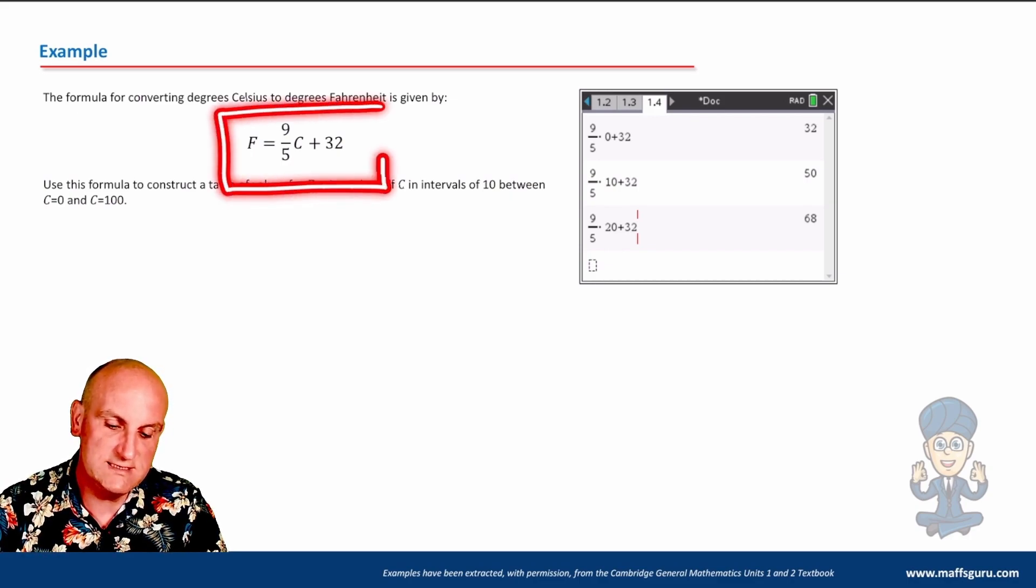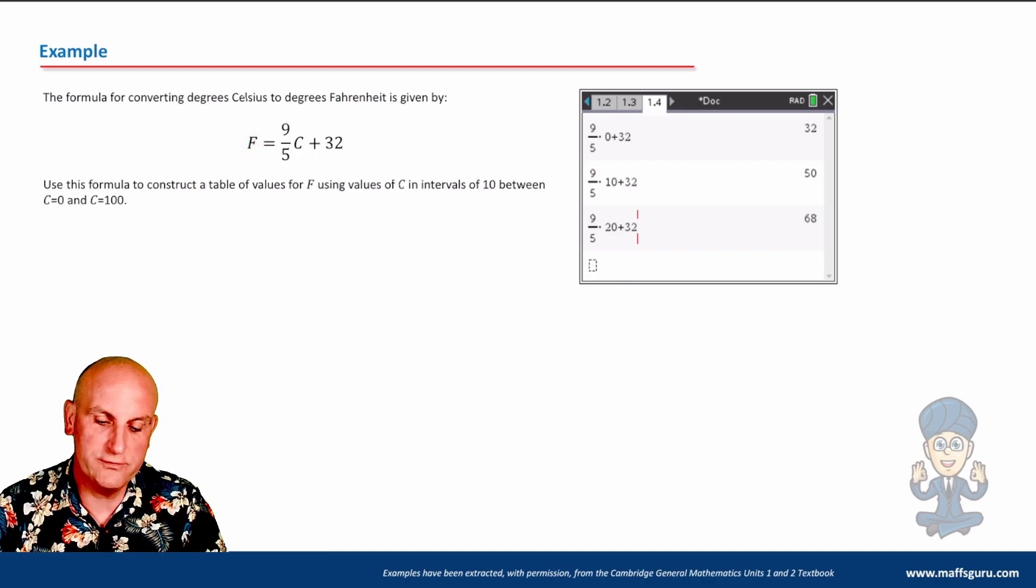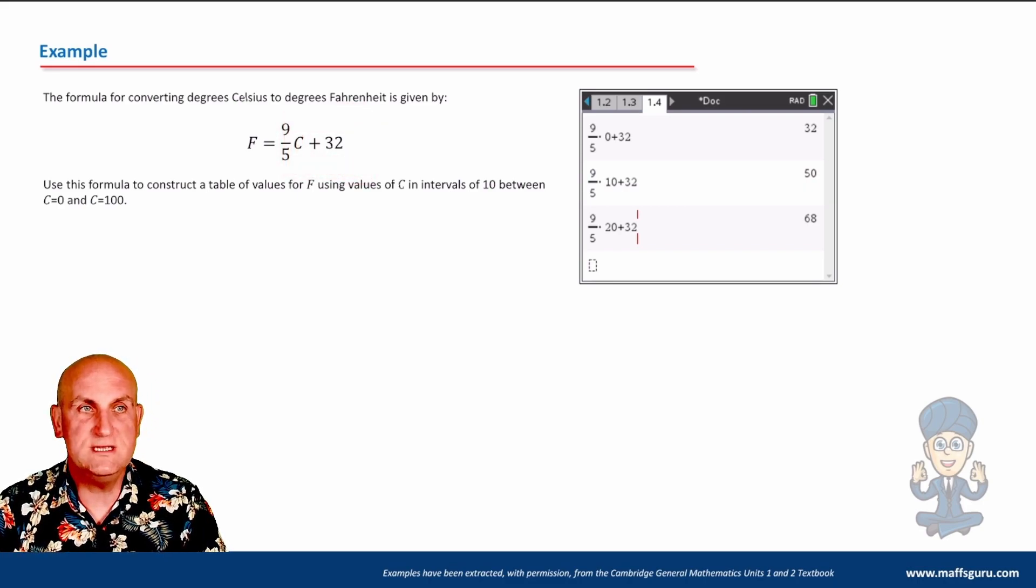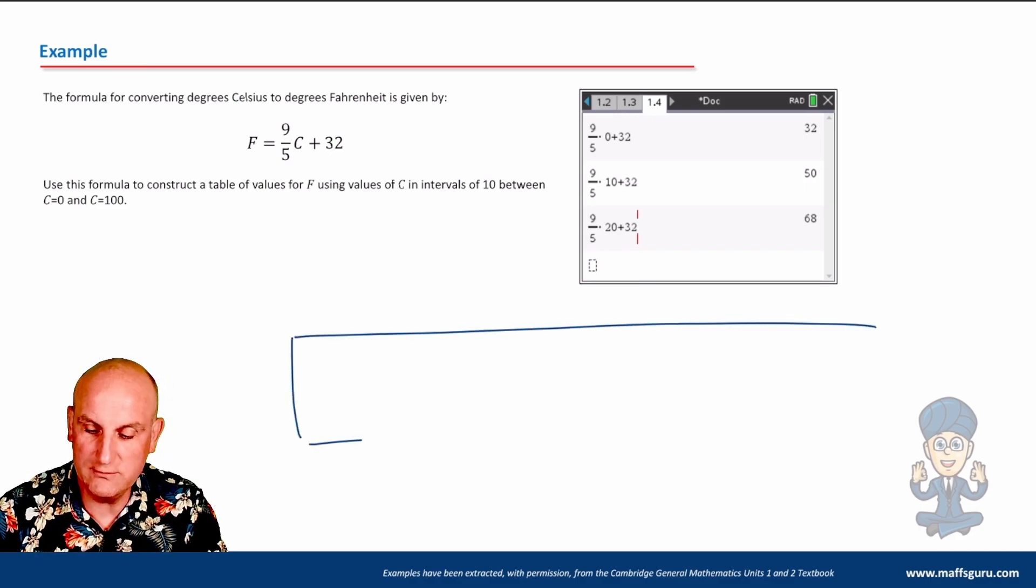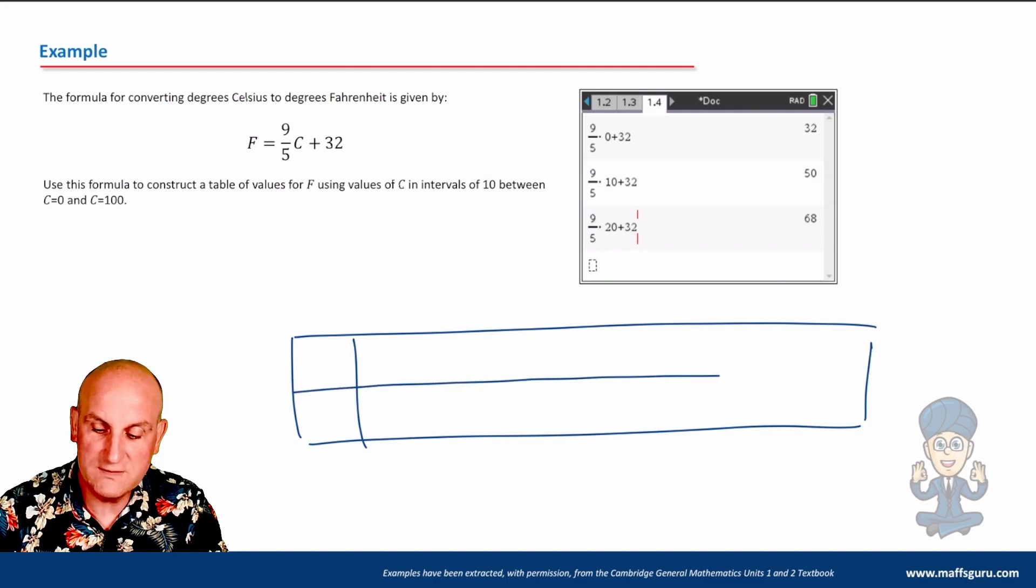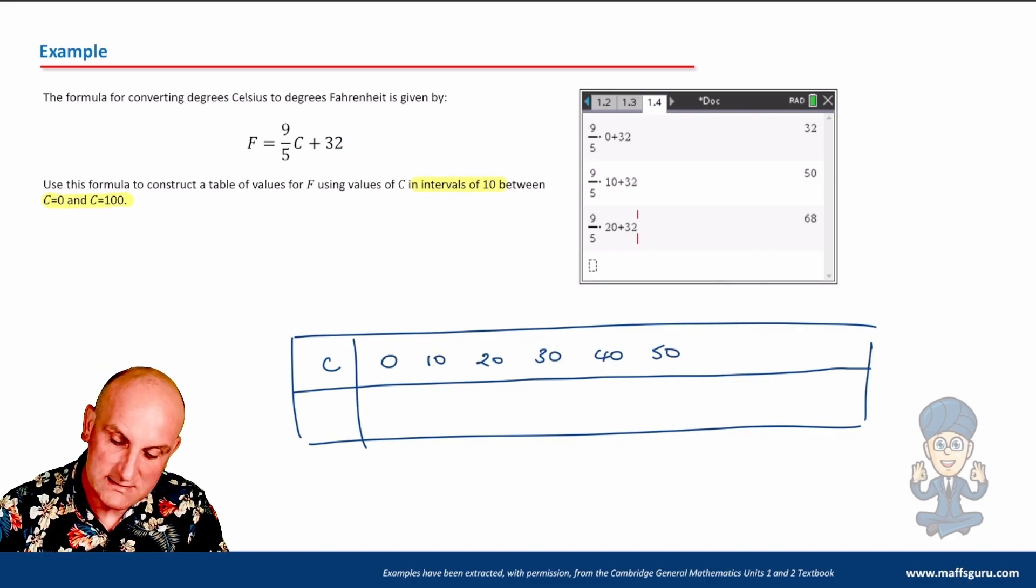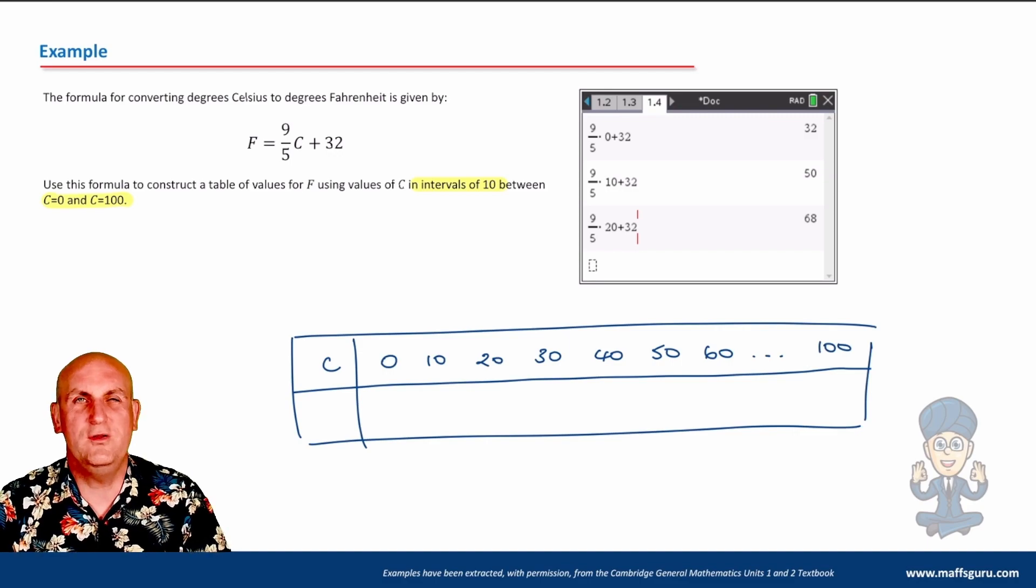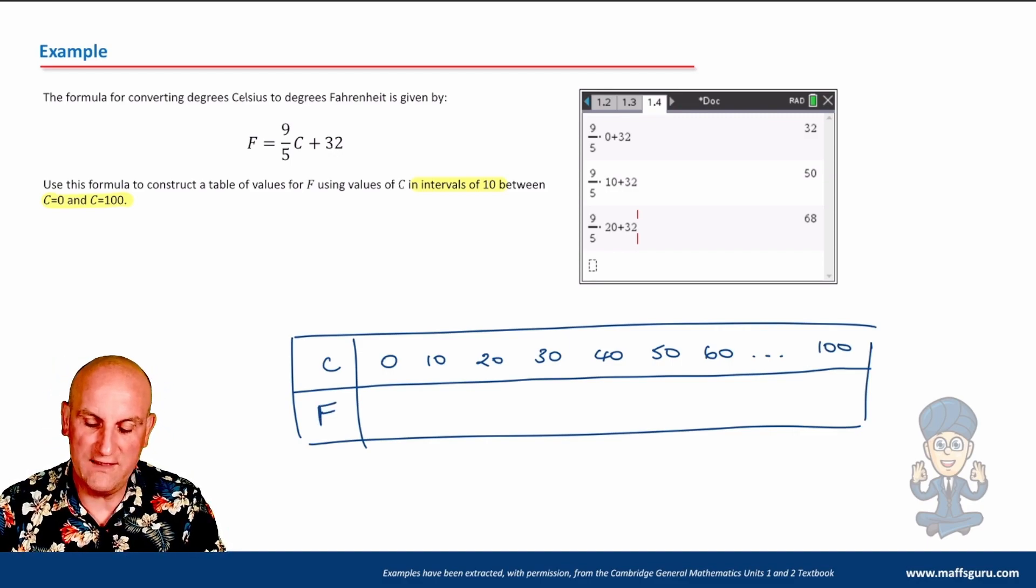The formula converting degrees Celsius to degrees Fahrenheit is given by F equals 9 divided by 5 multiplied by C plus 32. Use this formula to construct a table of values of F using values of C in intervals of 10 between 0 and 100. So what this is basically asking me to do is create a table. We are going to be given our C values. They've given me the C values. What they're saying is, let C go up in 10, start at 0 and end at 100. So here is my C value going 0, 10, 20, 30, 40, 50, 60, 100.